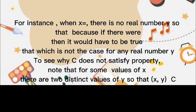For instance, when x equals 2, there is no real number y so that x² + y² = 1, because 2² + y² = 4 + y² = 1 would require y² = negative 3, which is not the case for any real number y. To see why this does not satisfy the property, note that for some values of x, there are two distinct values of y so that (x, y) is an element of C. One way to see this graphically is to observe that there are vertical lines, such as x = 1/2, that intersect the graph of C at two separate points.